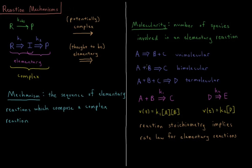If we have two molecules interacting to form a third molecule or two molecules forming two other molecules, that would be a bimolecular interaction, two reactants colliding to produce a product.